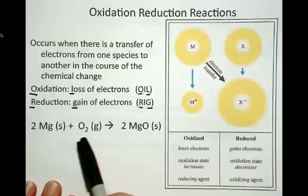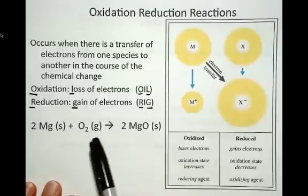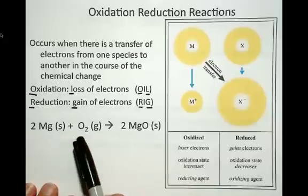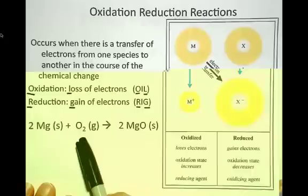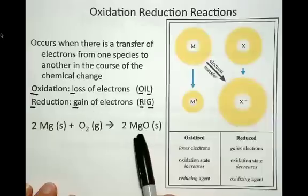Now looking at this reaction, I can identify this as an oxidation-reduction reaction because I know that originally the magnesium starts off with no charge—it's a neutral atom. The oxygen, a neutral elemental molecule, starts off with no charge. But in the end, I end up with this compound,